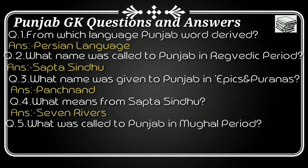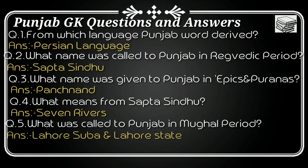Question number five: What was Punjab called in the Mughal period? The answer is it was known by the name 'Lahore Suba' — it was also called Lahore State.